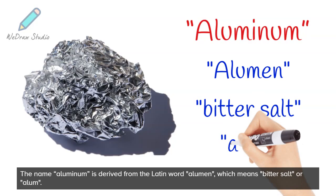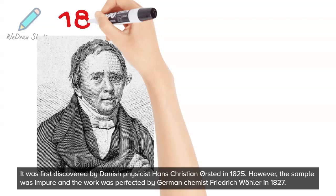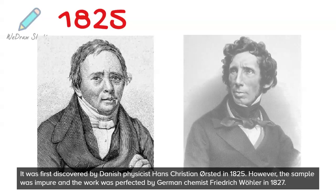It was first discovered by Danish physicist Hans Christian Ørsted in 1825. However, the sample was impure, and the work was perfected by German chemist Friedrich Wöhler in 1827.